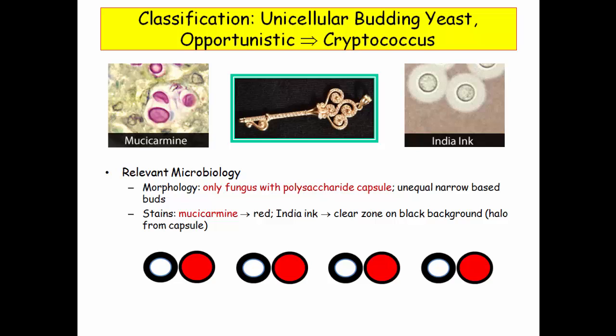The other key points here are the stains. They love mucocarmine, which stains the organism red. India ink is the other key stain — it reveals a dark background, a central organism, and a giant halo reflecting that capsule. Be prepared to see these stains and reference to the capsule in cryptococcus questions.